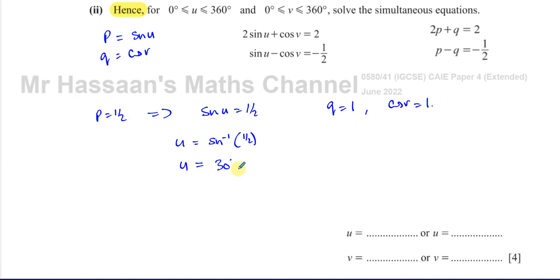The calculator gives us only one answer, the principal solution, which is 30 degrees. However, there's another solution which shares the same sine ratio as this angle. That angle is 180 minus 30 degrees, so 150 degrees. You have 30 degrees and 150 degrees. Those are the two solutions.